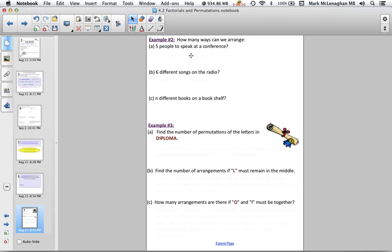Okay, so how does this work? So how many ways can we arrange 5 people to speak at a conference? So if all 5 people are going to talk, then it's P n comma 5, which is 5 factorial, which is 120 ways. If you're picking 6 songs to play on the radio or in the morning for announcements, how many different ways can we arrange those 6 songs? Again, it's P 6 comma 6, which is 6 factorial, which is 720 ways. N different books on a bookshelf. So again, P n, which is n factorial.